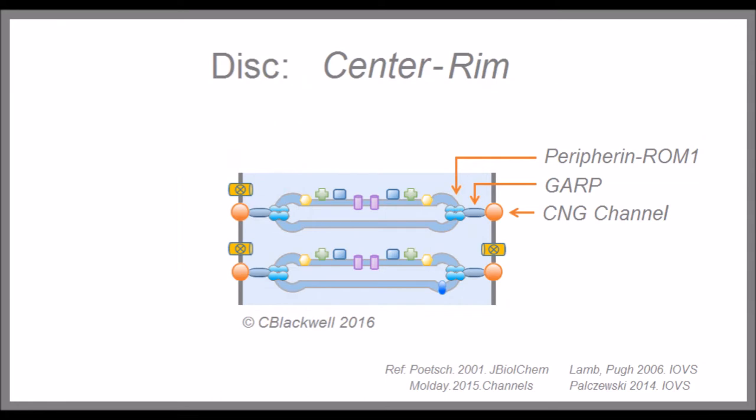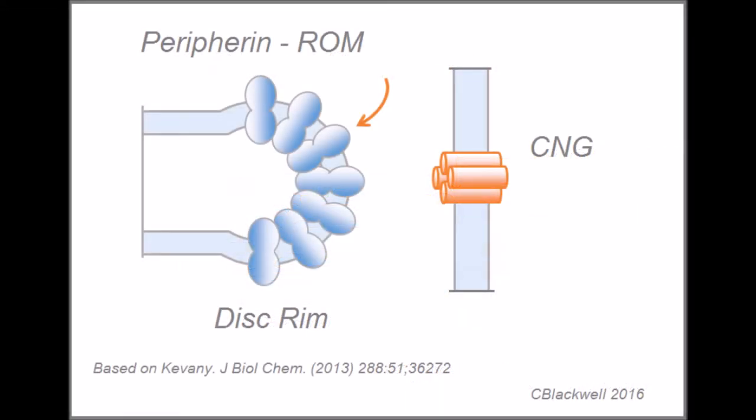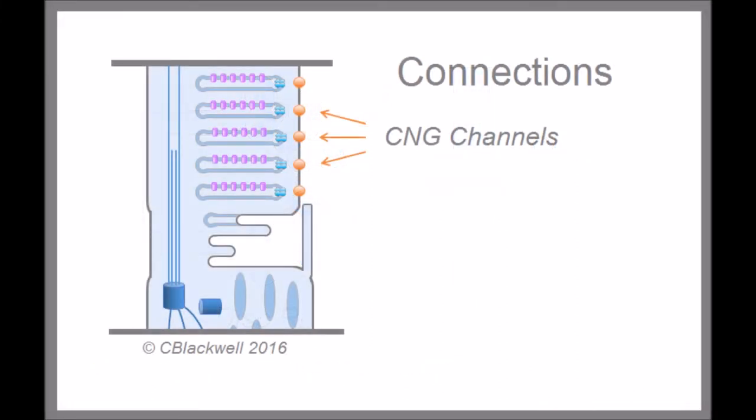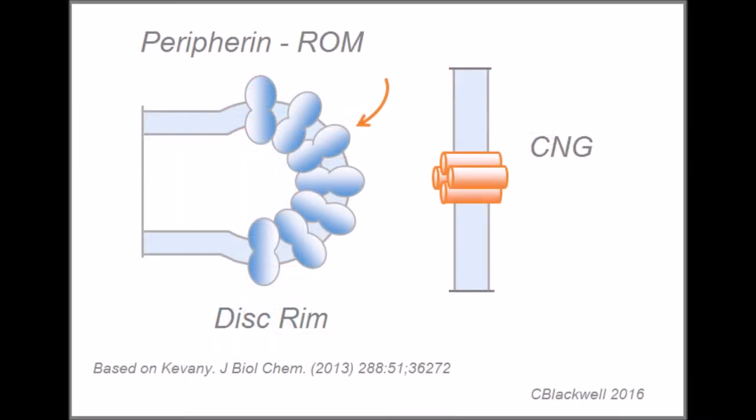Peripherin and ROM1 are important molecules that join in a complex that is required to form the rounded edge of the disc. CNG channels, though they are not located in the disc, it is important to know they are located in the plasma membrane. The peripherin-ROM complex of the disc rim is connected to the CNG channel in the plasma membrane by another molecule, a glutamic acid-rich protein, or GARP. That connection establishes the spacing between the disc edge and the plasma membrane.